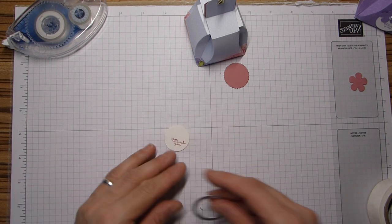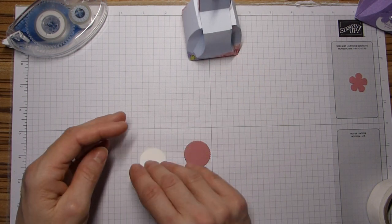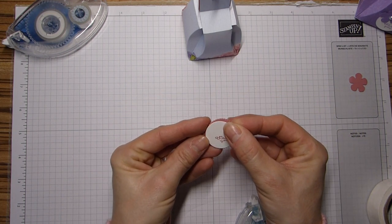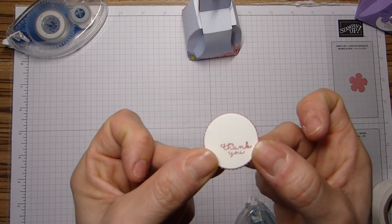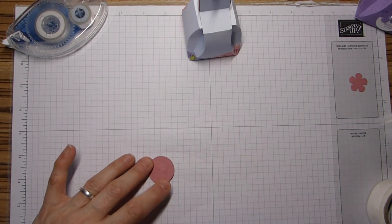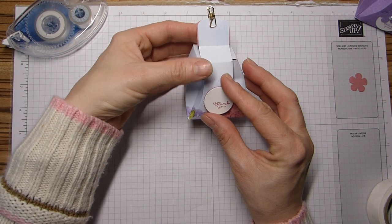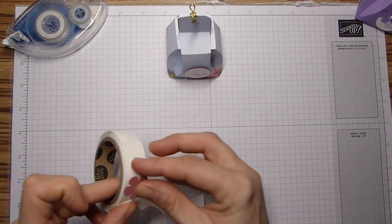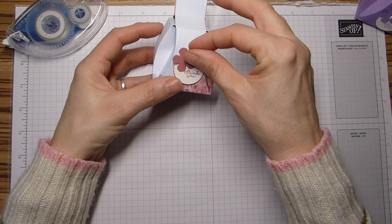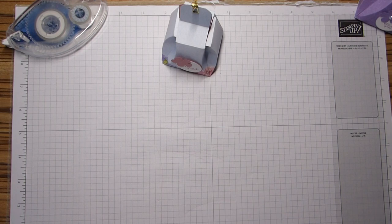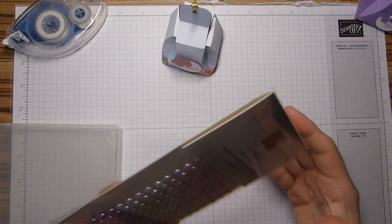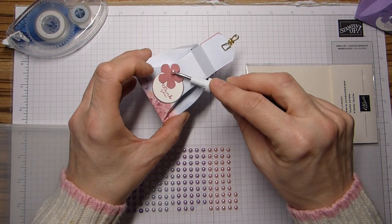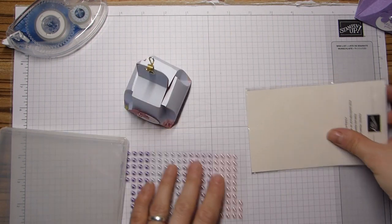A little bit of adhesive on the back there. And this really is just the smidgen of an edge to it. Again, that is going to go onto my box there. And then last but not least, my little flower is going to sit on the top corner there. And added to it one of the beautiful pastel pearls that can sit right in the center. And there we have it.